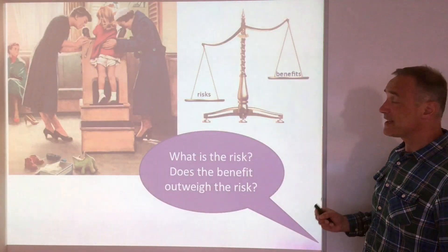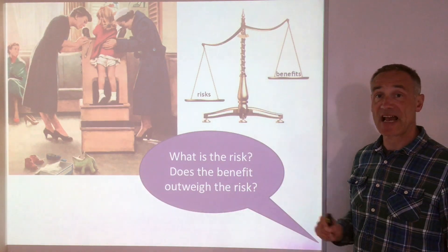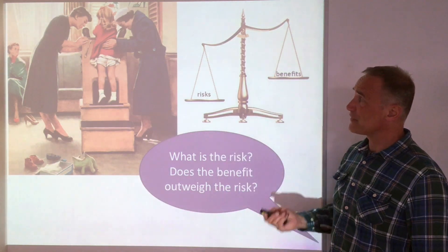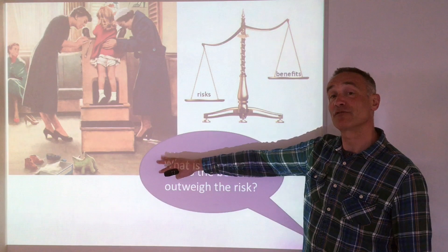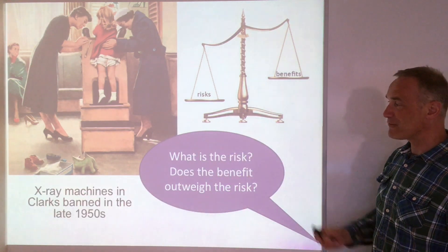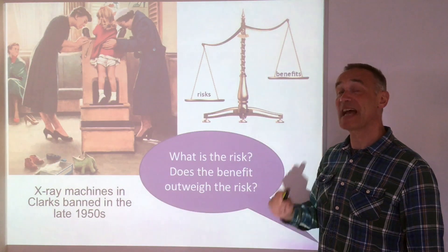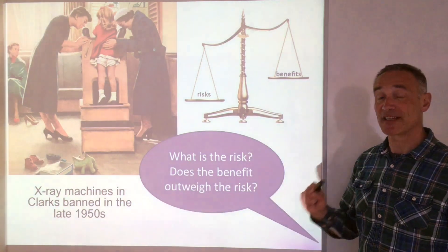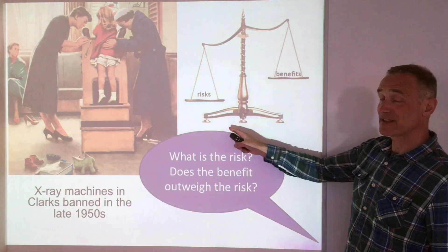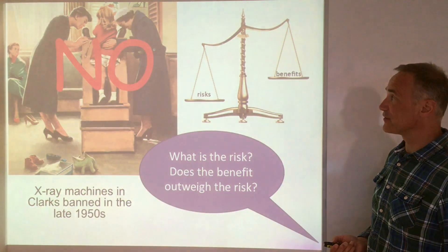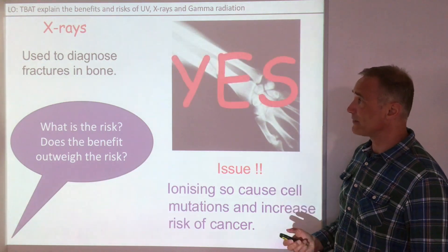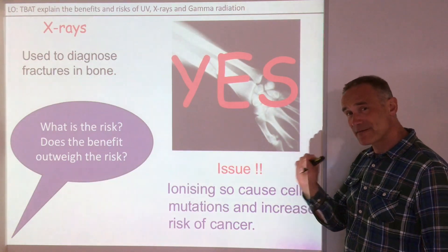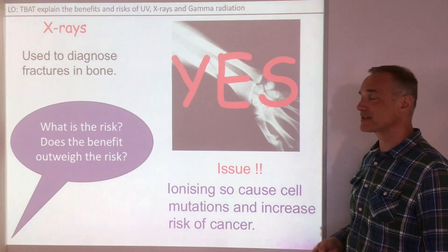So why do we use x-rays? The key thing is: do the benefits of using x-rays outweigh the risks? In the 1930s and 40s they used x-rays to see whether children's feet fitted inside their shoes — these were banned in the late 1950s when it was realised x-rays were harmful. You don't need to use x-rays to see where shoes fit, so the risks far outweigh the benefits there. But for an x-ray of a bone, the benefits of getting your bone treated far outweigh the very small risk of developing cancer.